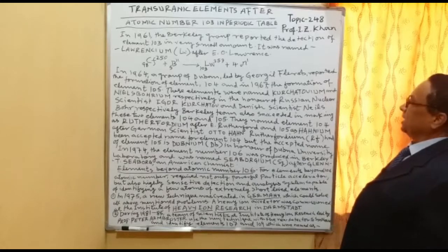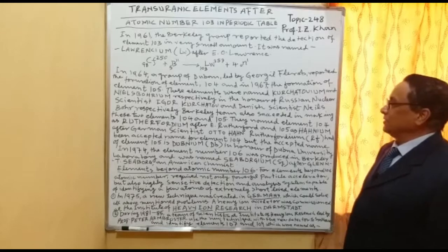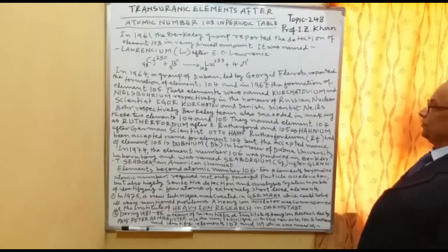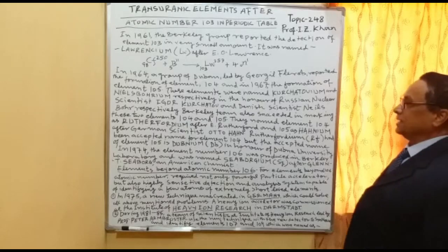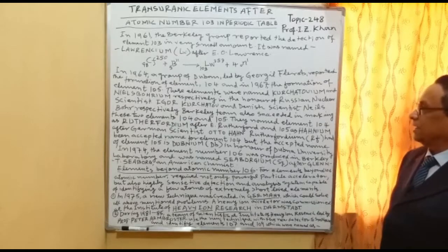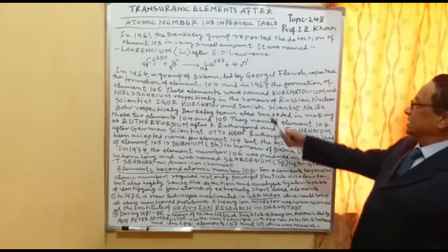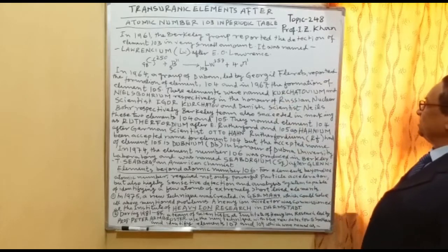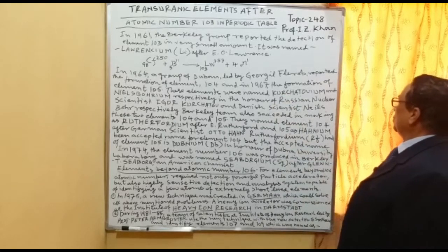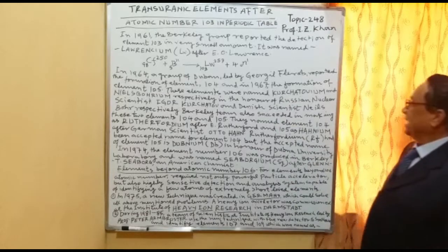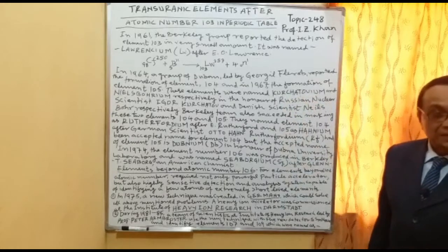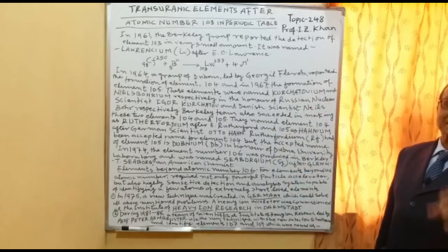In 1964, a group from Dubna led by Georgi Flerov reported the formation of element 104, and in 1967, the formation of element 105. These two elements, 104 and 105, were reported between 1964 and 1967. The Russian scientists proposed naming them after Russian scientist Kurchatov.